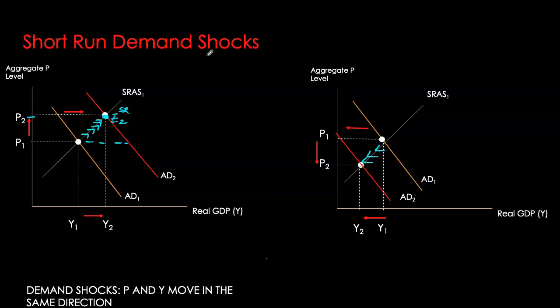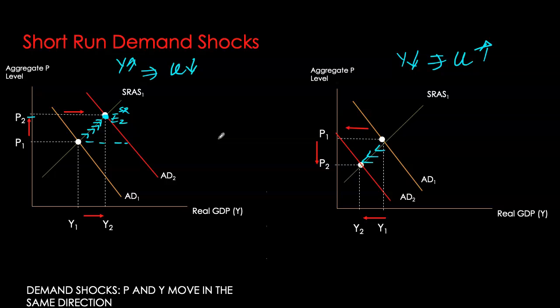A third variable to account for is unemployment. Whenever your GDP is rising, unemployment is moving in the opposite direction. In this case, GDP is falling, so unemployment must be rising. Given these very simple examples, you can see that the ADAS model gives us the ability to forecast about the economy. For any given demand shock, we can now predict what will happen to the economy's GDP, unemployment levels, and the overall price level or inflation rate as a result of a particular shock.